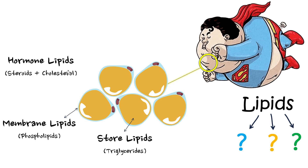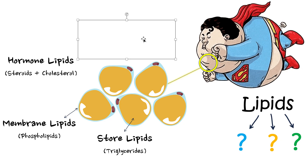So another category is phospholipids, and they make up your plasma membrane. Then there's one more — hormone lipids. This category consists of steroids and cholesterol. These are the things that make you muscular as a male, or that trigger female characteristics when you hit puberty. So we have three kinds of lipids: triglycerides, phospholipids, and hormone lipids such as steroids and cholesterol.